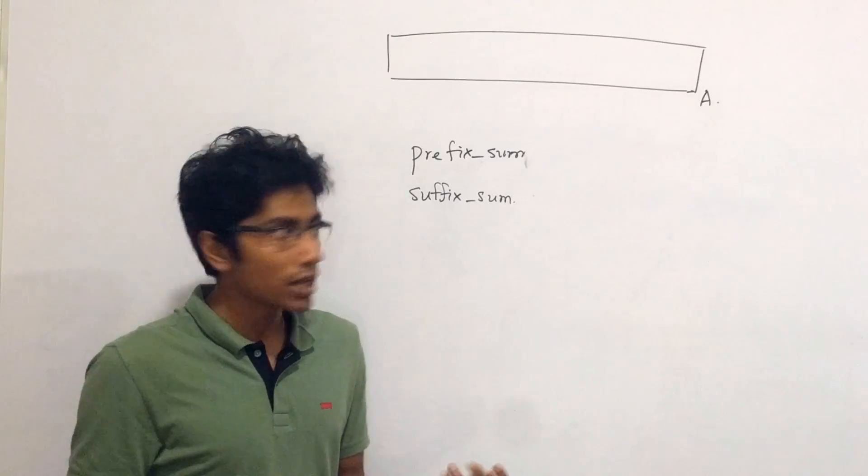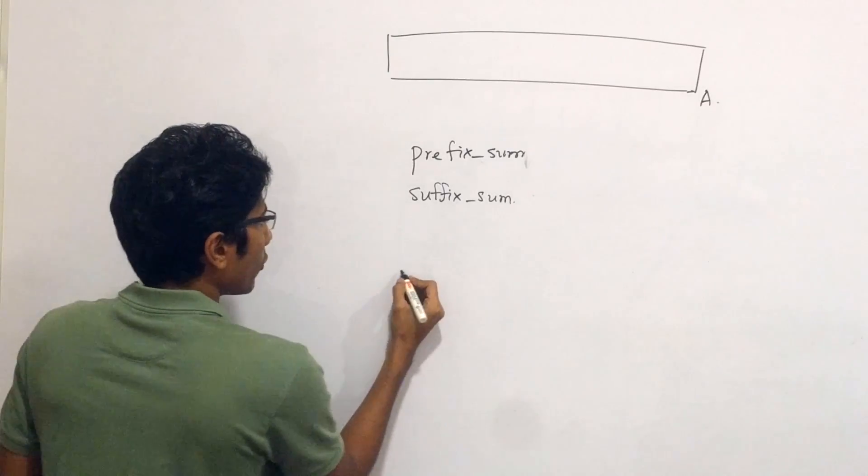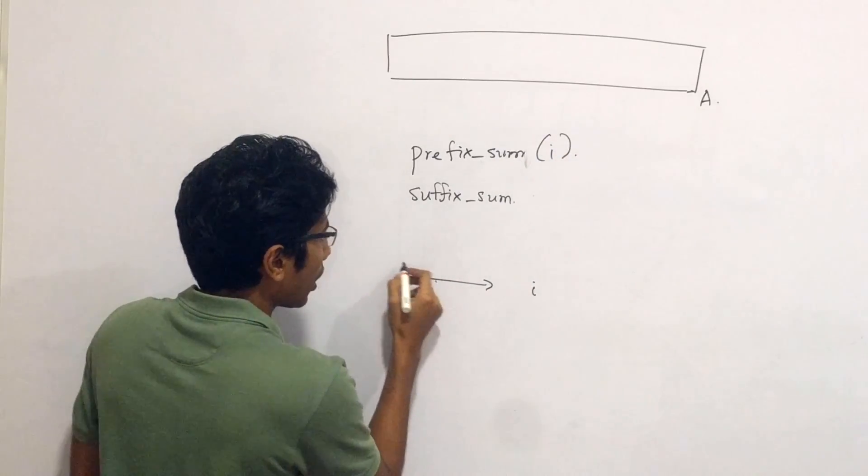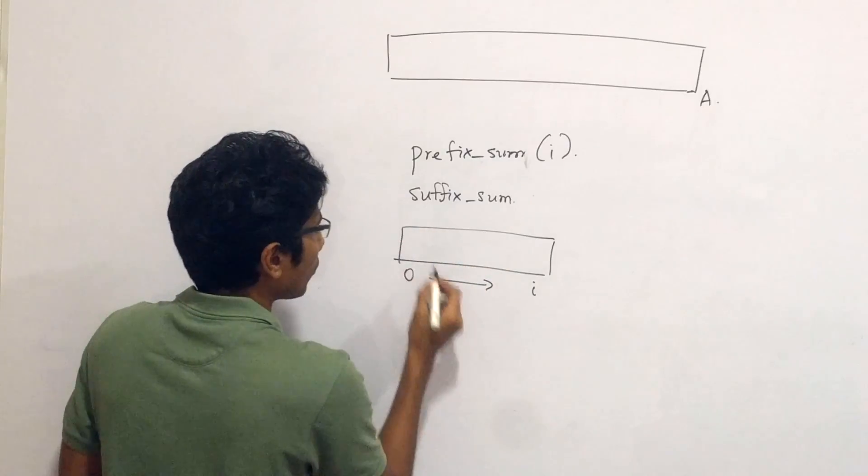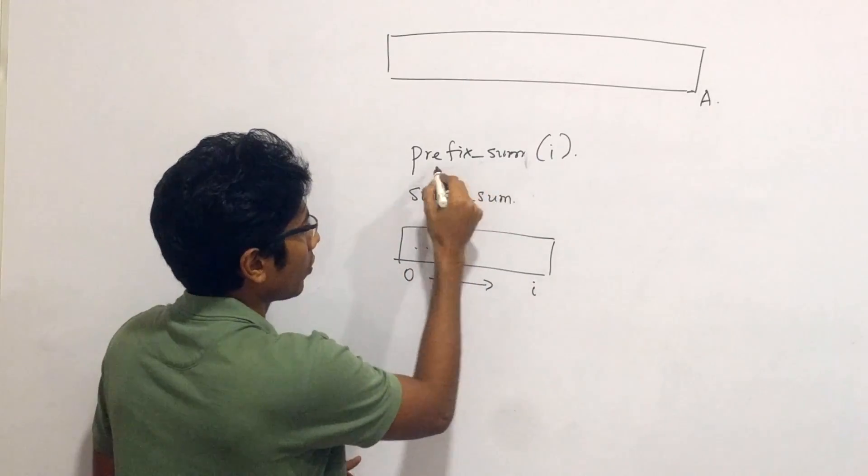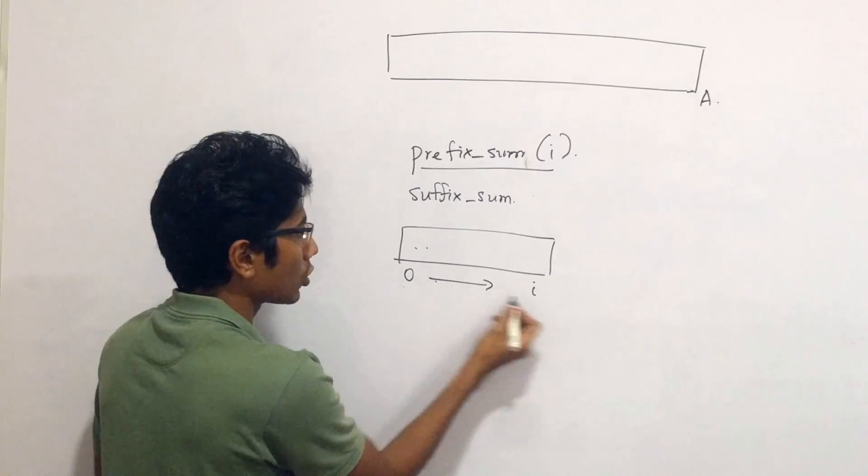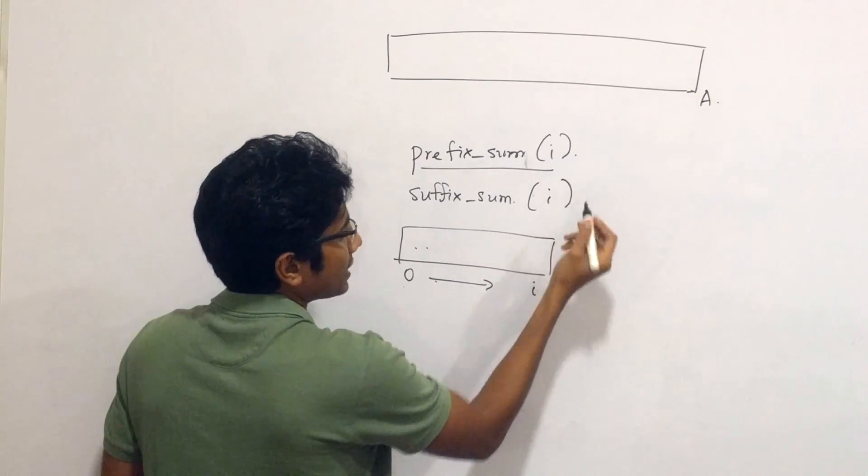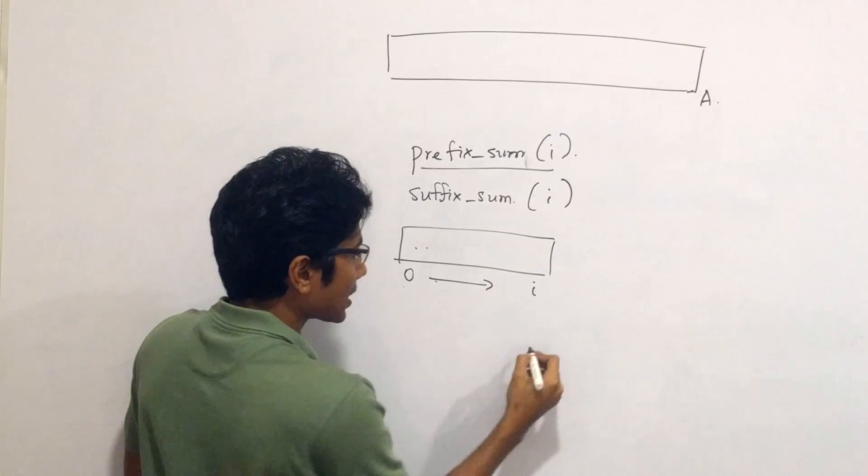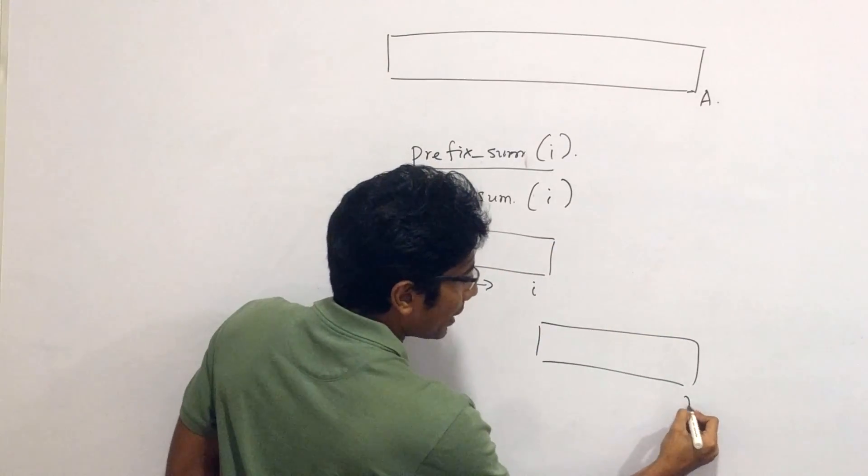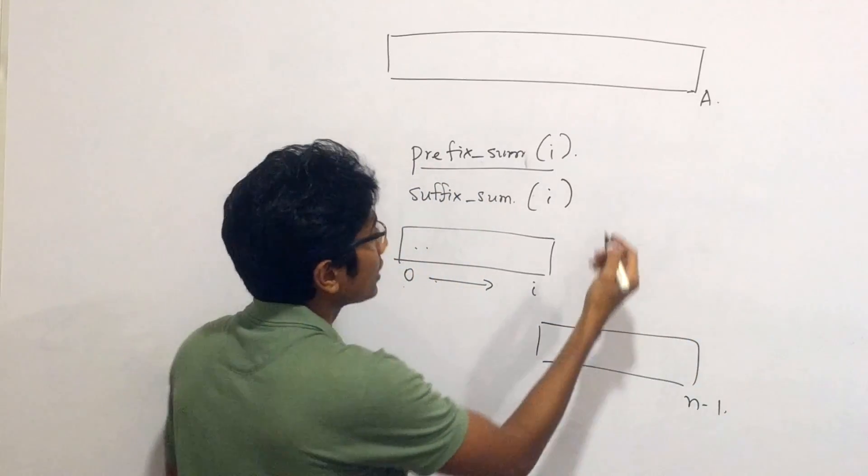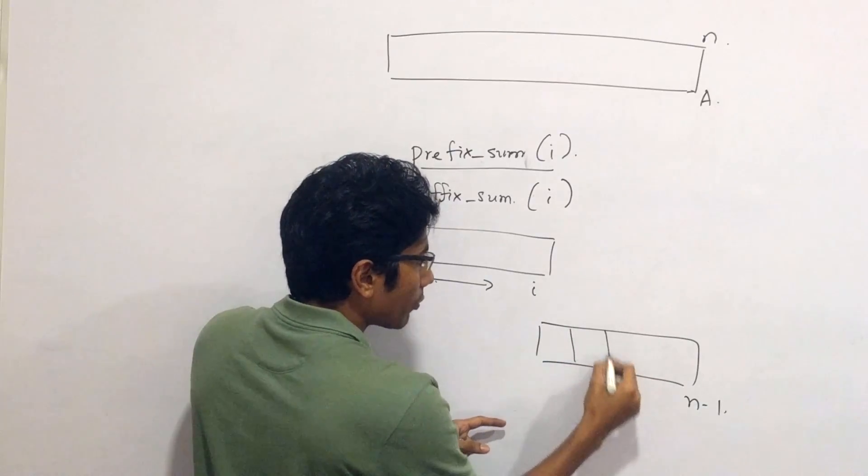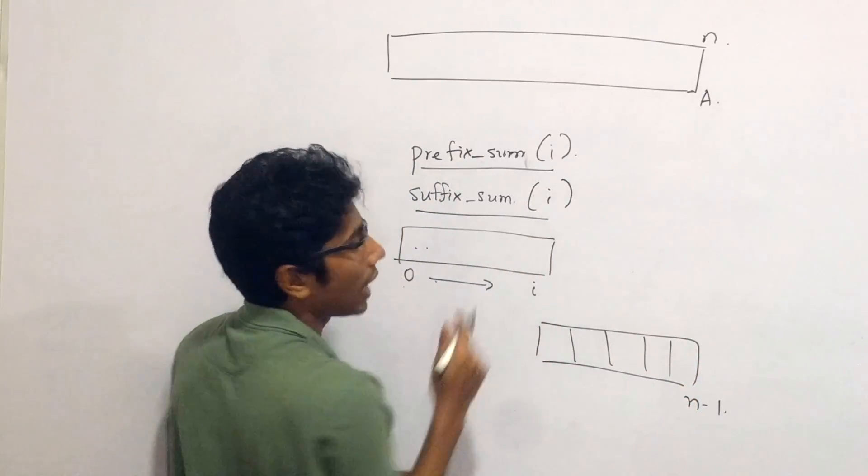Quick note in case you don't know what prefix and suffix sums are. Prefix sums means from index 0 to an index i, you get the sum of all elements in this range for prefix sum of i. So from 0 to i, you get the sum of all those elements. Suffix sum tells you that for index i, you get the sum of all elements from index i to n-1. So if the array is of length n, then you get the sum of all these elements in suffix sum i.